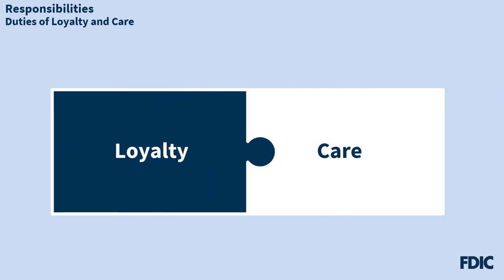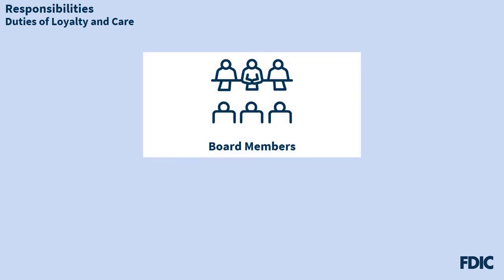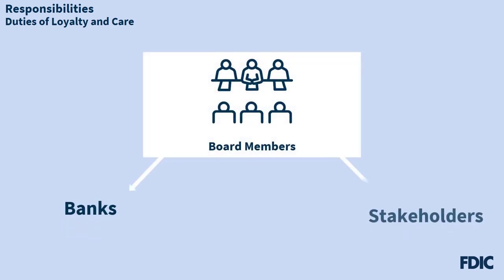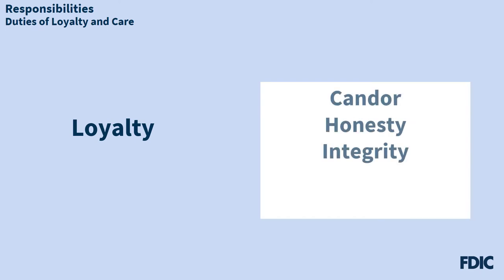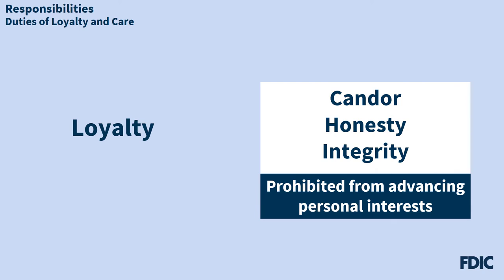The second individual responsibility is the duties of loyalty and care. All board members have obligations to discharge their duties to their banks and stakeholders, and to comply with federal and state laws, rules, and regulations. The duty of loyalty requires directors to oversee a bank's affairs with candor, honesty, and integrity. Directors are prohibited from advancing their own personal or business interests, or those of others, at the expense of the bank.